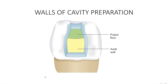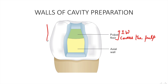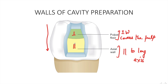Coming to the pulpal wall or floor and the axial wall — the pulpal wall is an internal wall towards the pulp, covering the pulp. It can be both parallel and perpendicular to the long axis of the tooth. As you can see from this image, the axial wall is parallel to the long axis of the tooth, while this part of the pulpal floor is perpendicular to the long axis.